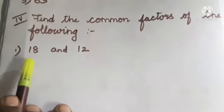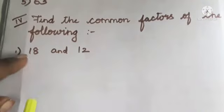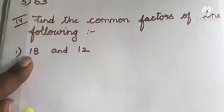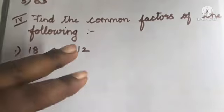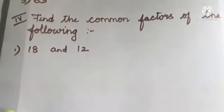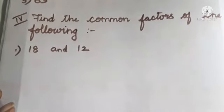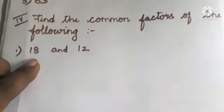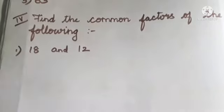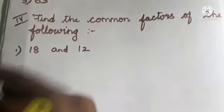The steps are: Step 1 — find the factors of 18. Step 2 — find the factors of 12. Step 3 — find the common numbers that appear in both factor lists, which are the common factors of 18 and 12.